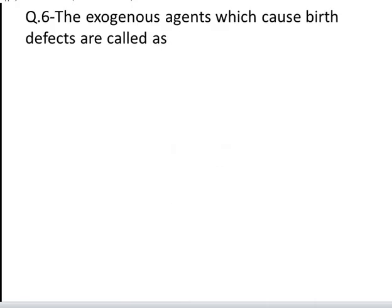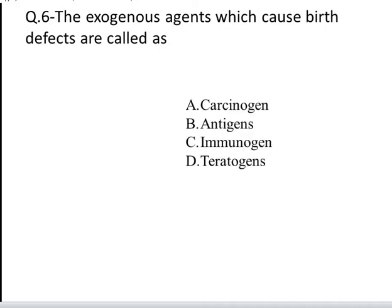The next question is: the exogenous agents which cause birth defects are called. These are the four options: A. Carcinogens, B. Antigens, C. Immunogens, D. Teratogens. Yes, the correct answer is D, Teratogens.